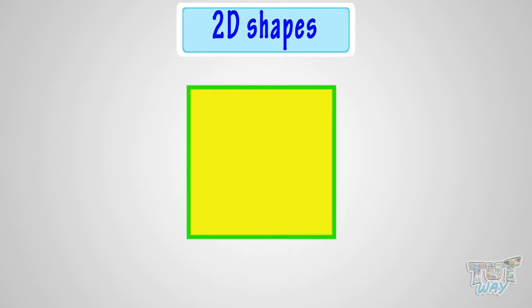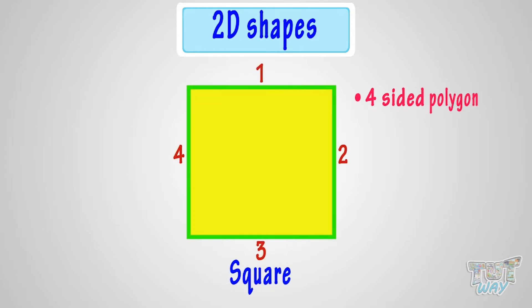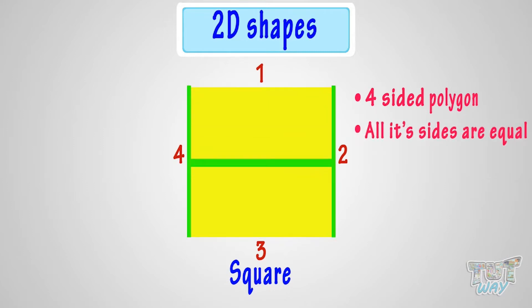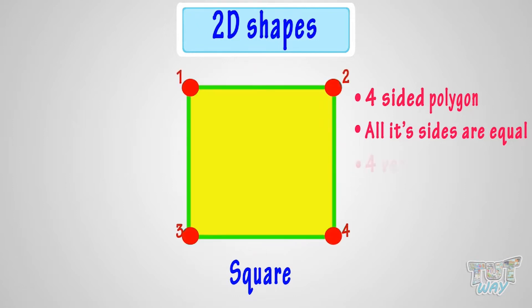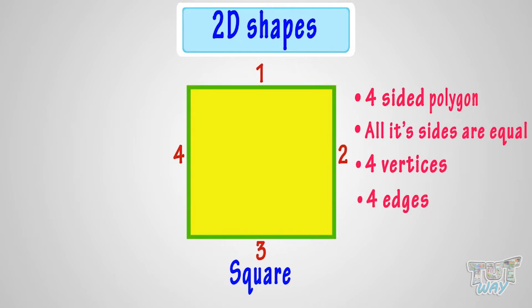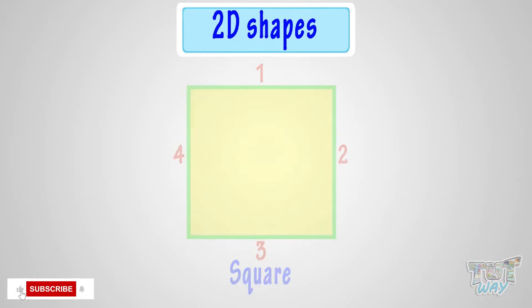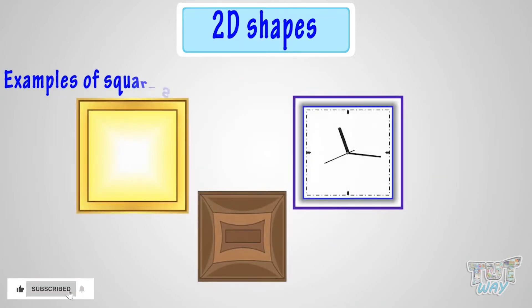This is a four-sided shape called a square, also a four-sided polygon. All its sides are equal. It has four vertices and four edges. These are various things that are square in shape.